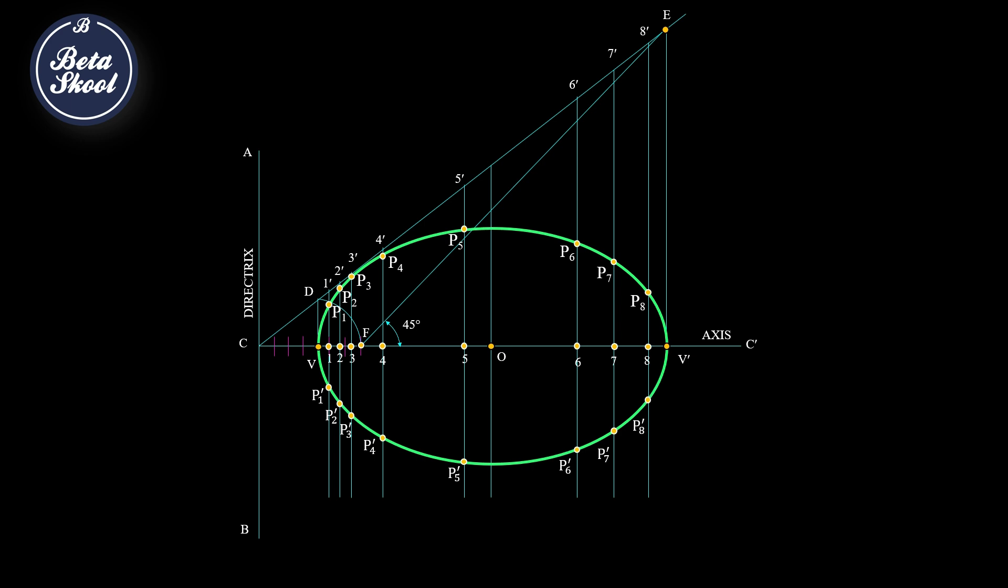First, mark the point P and join it to the focus F. At point F, draw a perpendicular to the line PF, and extend it until it meets the directrix. Call this intersection point T. Join T to P and extend it further. This line is the tangent, labeled TT.